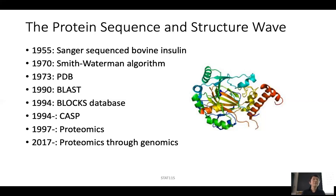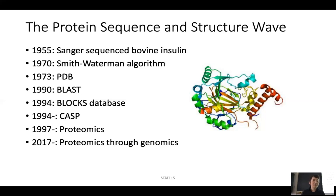Around this time, many groups were involved in predicting protein structures, because once you have the protein sequence, there's usually a specific way that protein folds into a 3D structure. Many computer scientists, physicists, and biochemists started using computational algorithms to predict protein structure, and everybody published saying their method was the best. So a group of protein structure prediction experts started the CASP competition — Critical Assessment of protein Structure prediction — which runs every other year.